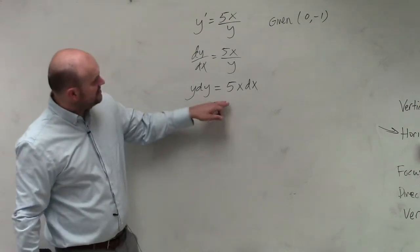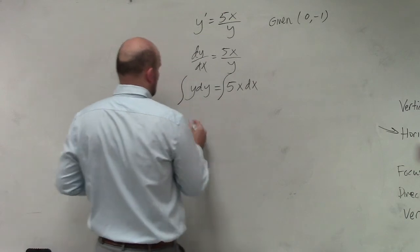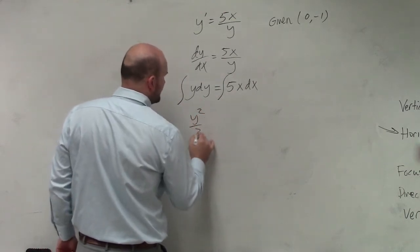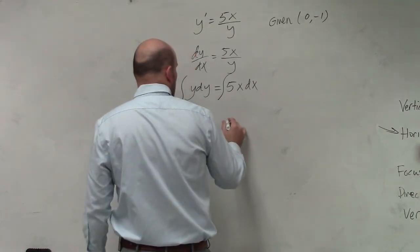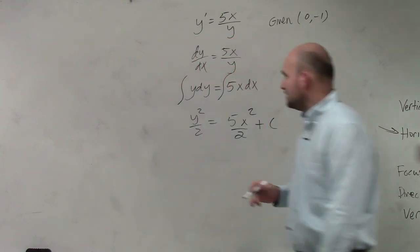Now, in this case, what I'm simply going to do is just go ahead and integrate. And I'll have y squared over 2 equals 5x squared over 2. And then I can have my plus c.